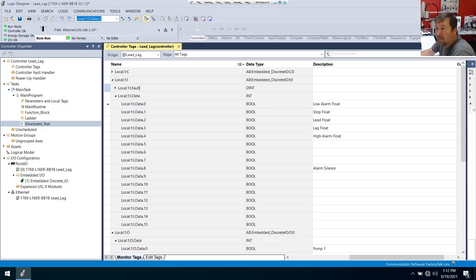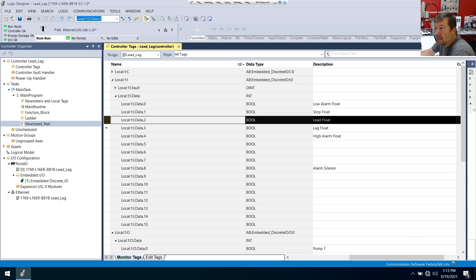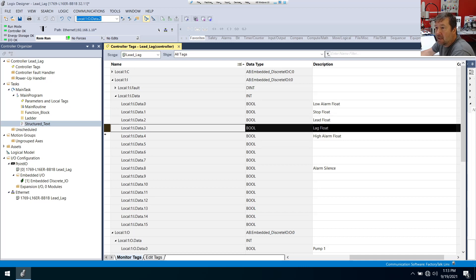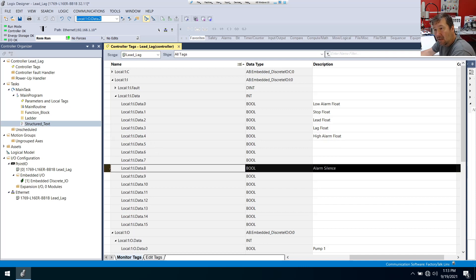But let's talk about the IO assignments that I have first. For my inputs, I have input 0 as my low alarm float. I have input 1 as my stop float. I have input 2 as my lead float. Input 3 as my lag float. I have input 4 as my high alarm float. And then I have input 8 as an alarm silence.